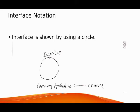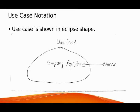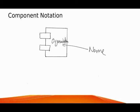The interface notation is shown using a circle. Here 'Company Application' is the name of the interface. Use case notation is shown in an ellipse shape — here 'Company Register' is the name for the use case. The component notation shows the component in the diagram — here the name of this component is 'Organization.'